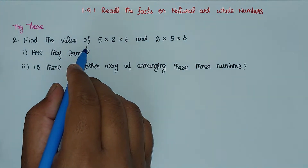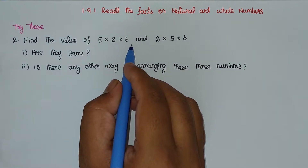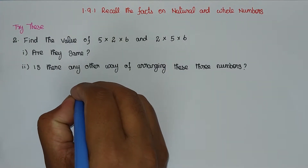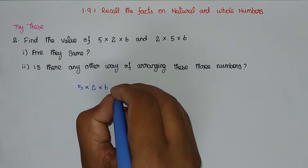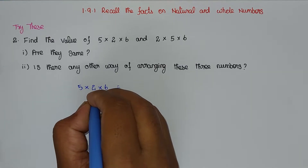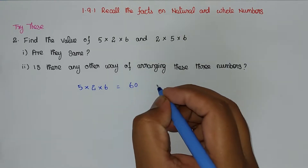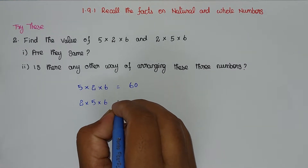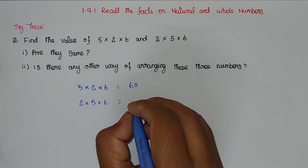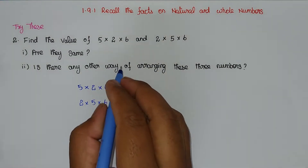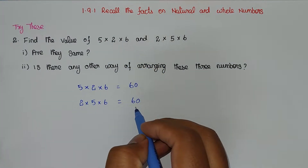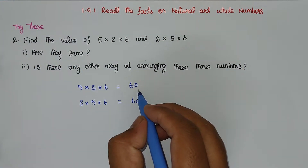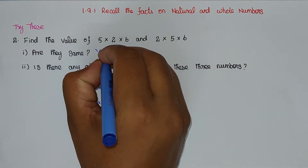Second problem. Find the value of 5 into 2 into 6, and 2 into 5 into 6. The value of 5 into 2 into 6 is 60. The value of 2 into 5 into 6 is also 60. Are they the same? 60 and 60 — yes, they are the same. So the first problem answer is yes.